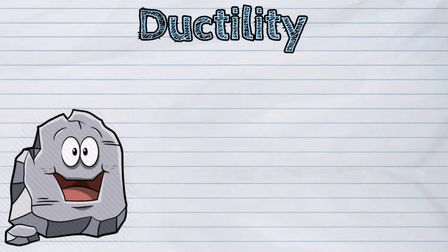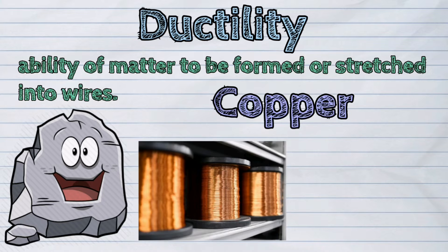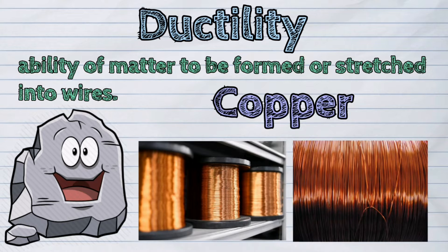Another property of solids is ductility. Ductility is the ability of matter to be formed or stretched into wires. Copper is a kind of solid that best exhibits ductility. This is why it is used in making wires and cables.